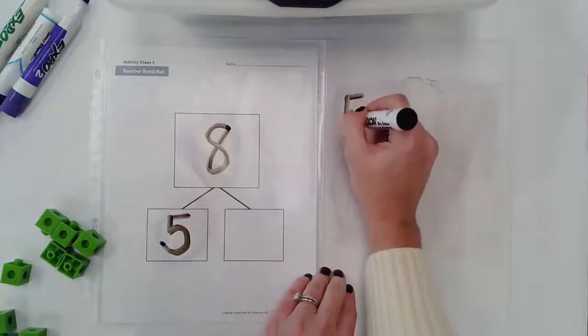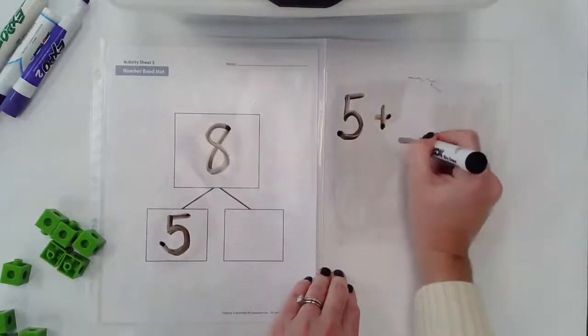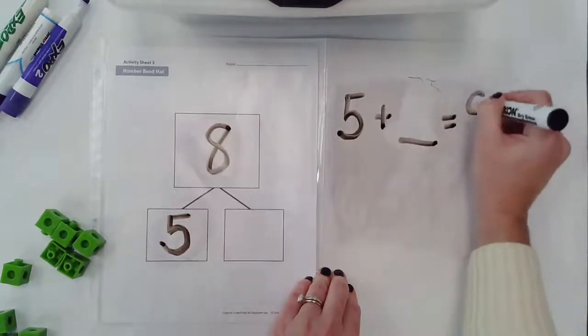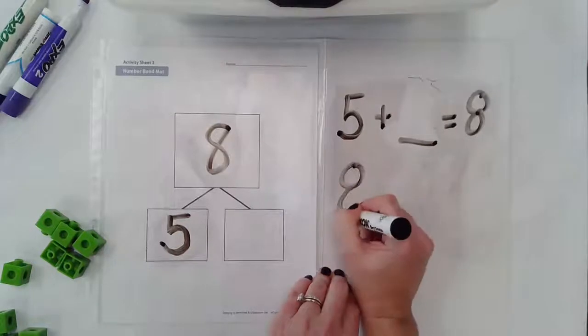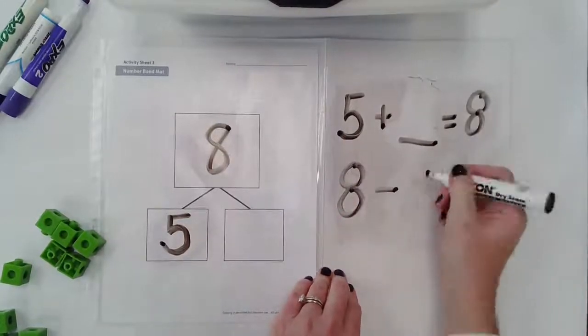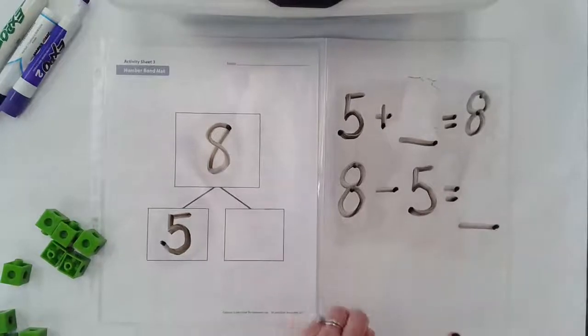One thing we could do is we could think about addition. Think about our number partners for eight: five and what together give us eight. And then I could also think about subtraction. Eight take away five is going to give me what number.